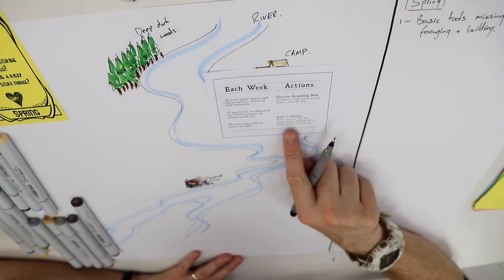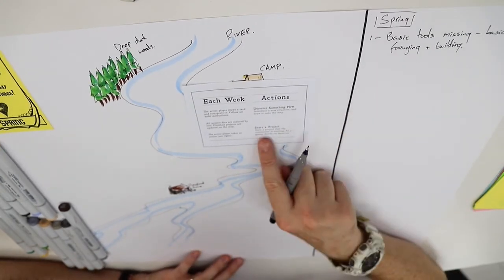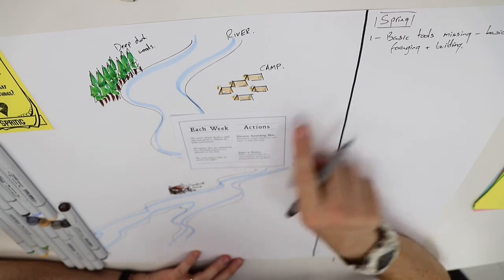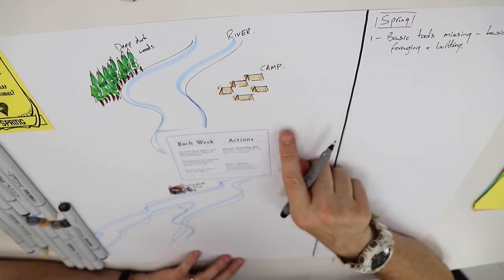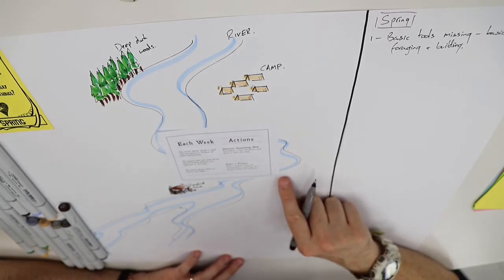The start a project might reflect what has happened in the turn. My start a project here might be that members of the camp are going to go into the local area, maybe they're going to try and get across to the deep dark woods, they're going to get some basic materials necessary to build some of these tools.